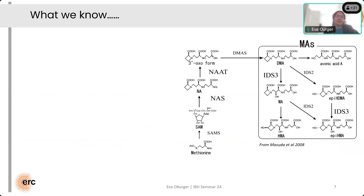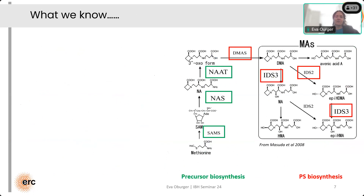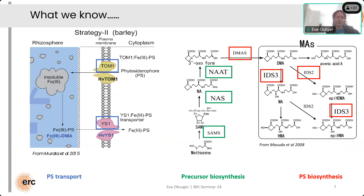We also know the biosynthetic pathway — the genes involved in phytosiderophore biosynthesis. We have the precursor genes: SAMS, NAS, and NATS. Phytosiderophores are biosynthesized starting from methionine. Nicotianamine is the true precursor, and the DEMAS gene converts nicotianamine into DMA, which is always the first phytosiderophore biosynthesized. Then the IDS genes convert DMA into the other phytosiderophores that are then exuded. We also know the transport genes — the most important one for phytosiderophore exudation is TOM1, and for the re-uptake of the metal-phytosiderophore complex is the Yellow Stripe 1 gene.